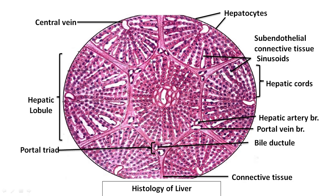The Ito cell has the function of storing fat droplets or lipid material. In addition to fat, it also stores fat-soluble vitamins: vitamin A, D, E, and K.